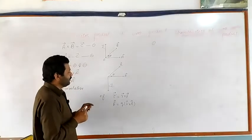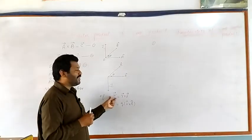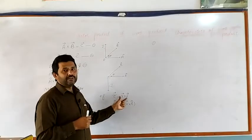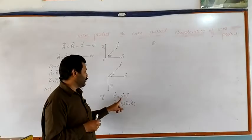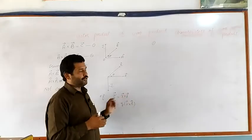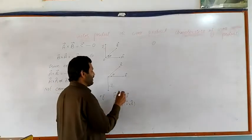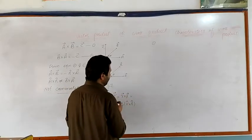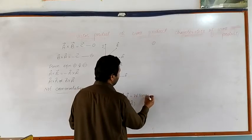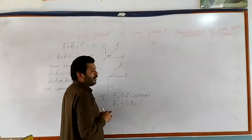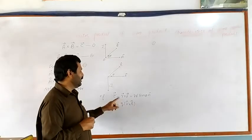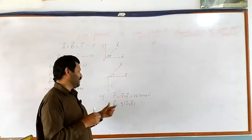Examples of cross product: Torque, which is a vector quantity, is the cross product of vector r and vector f, where vector r is the position vector and vector f is a force. Simplifying the cross product of these vectors, the resultant will be r f sine theta into n-hat, where n-hat is the unit vector perpendicular to the plane containing vector r and vector f.